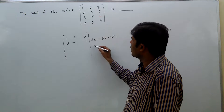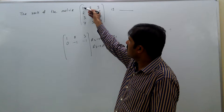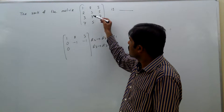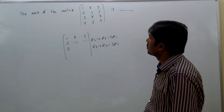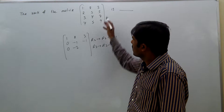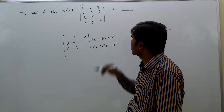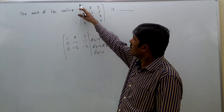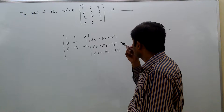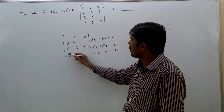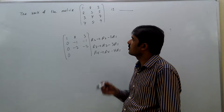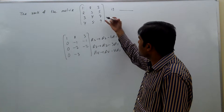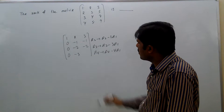To make the first element of R3 zero, we apply R3 minus 3R1: 3 minus 3×1 = 0, then 4 minus 3×2 = 4 minus 6 = minus 2, and 7 minus 3×3 = 7 minus 9 = minus 2. Similarly for R4, we apply R4 minus 4R1: 4 minus 4×1 = 0, then 5 minus 4×2 = 5 minus 8 = minus 3, and 9 minus 4×3 = 9 minus 12 = minus 3.